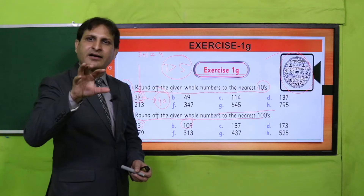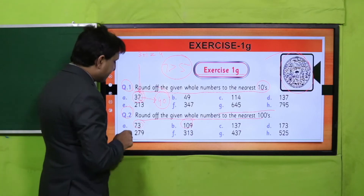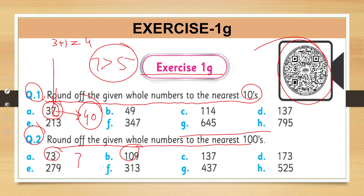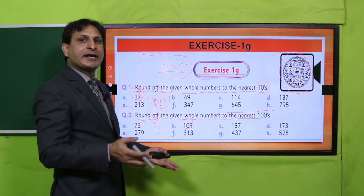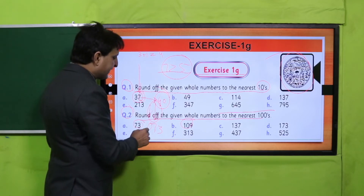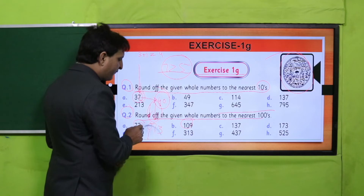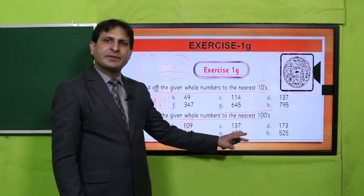Nearest hundred round off کرنے کے لیے آپ tens place والے digit کو دیکھتے ہیں۔ مثلاً یہاں پر 73 ہے، 73 کے tens place پہ digit seven آتا ہے۔ Seven greater than five ہے، تو hundreds place کے اوپر جو digit ہوگا اس میں one add کر دیں گے۔ یہاں پر hundreds place digit نہیں ہے، تو وہاں zero ہے۔ ہم لوگ zero میں one add کریں گے، تو 73 round off ہو کر 100 بن جائے گا۔ Similarly آپ نے باقی سارے parts complete کر لینے ہیں۔